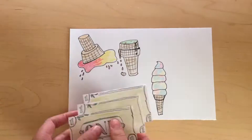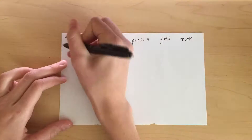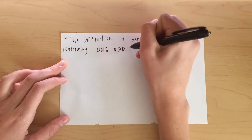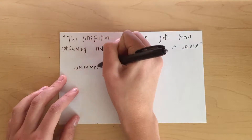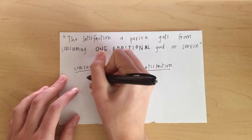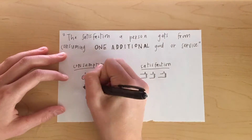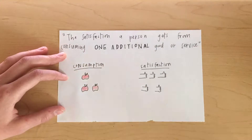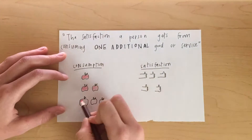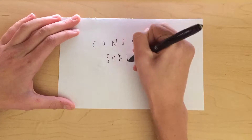So what does this have to do with marginal benefit? Well, marginal benefit is the satisfaction a person gets from consuming one additional good or service. In the ice cream cone example, you can see that as my consumption increased, the satisfaction that ice cream brought me decreased. This shows the law of diminishing marginal utility, which means as you increase consumption of a product, the marginal utility decreases. And marginal utility is the satisfaction you get from each product.